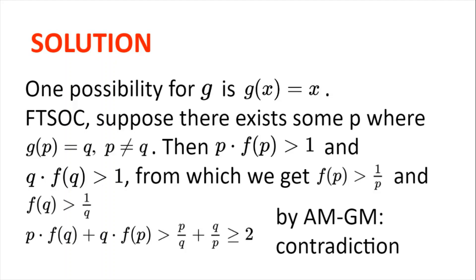Let's try and guess some reasonable functions that g could be. An obvious possibility is g(x) = x. Let's try and prove that g(x) = x. So, for the sake of contradiction, suppose there exists some p where g(p) = q but p ≠ q. Then setting y = p will not satisfy the inequality, and so 2·p·f(p) > 2, meaning p·f(p) > 1.